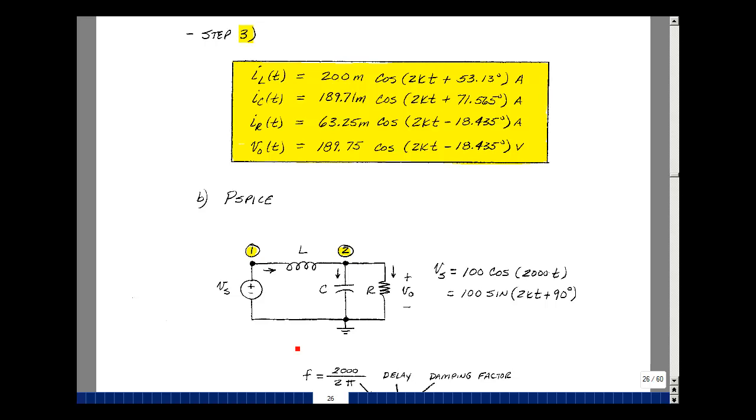In our last video, we took a look at this RLC circuit and we found the current in the inductance, the current in the capacitance, the current in the resistance, and the voltage across the resistance in steady state. The values are listed above.